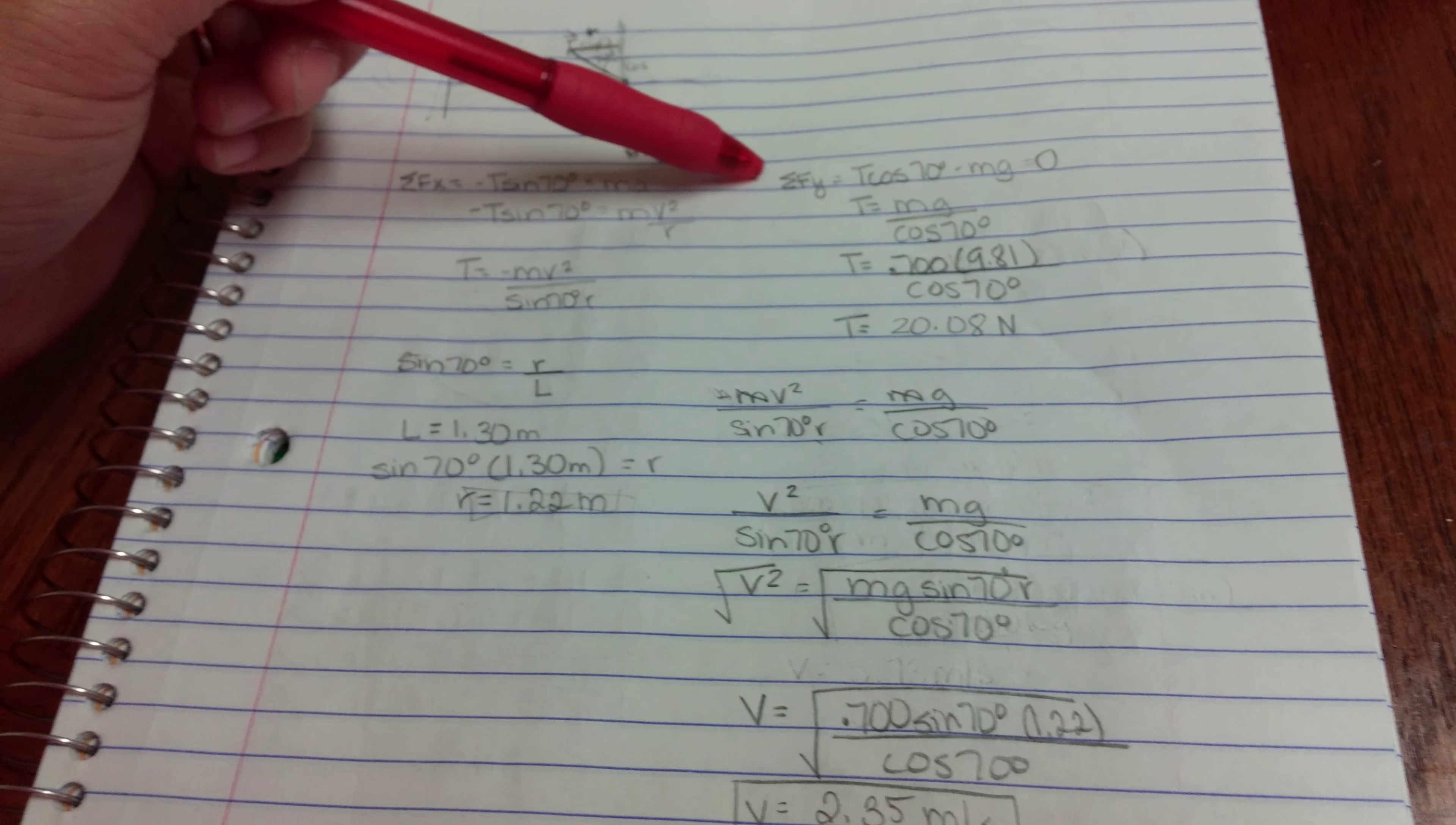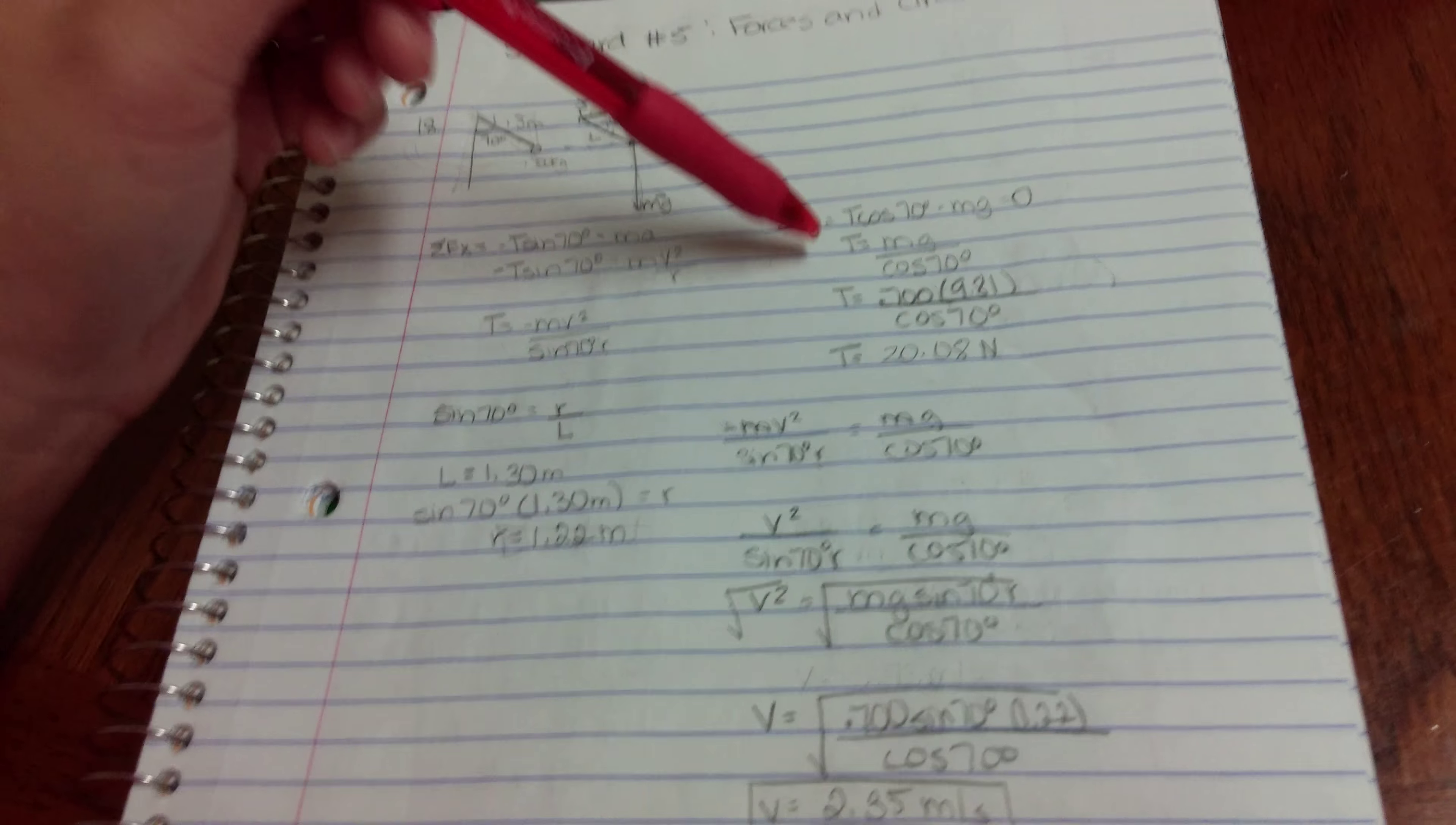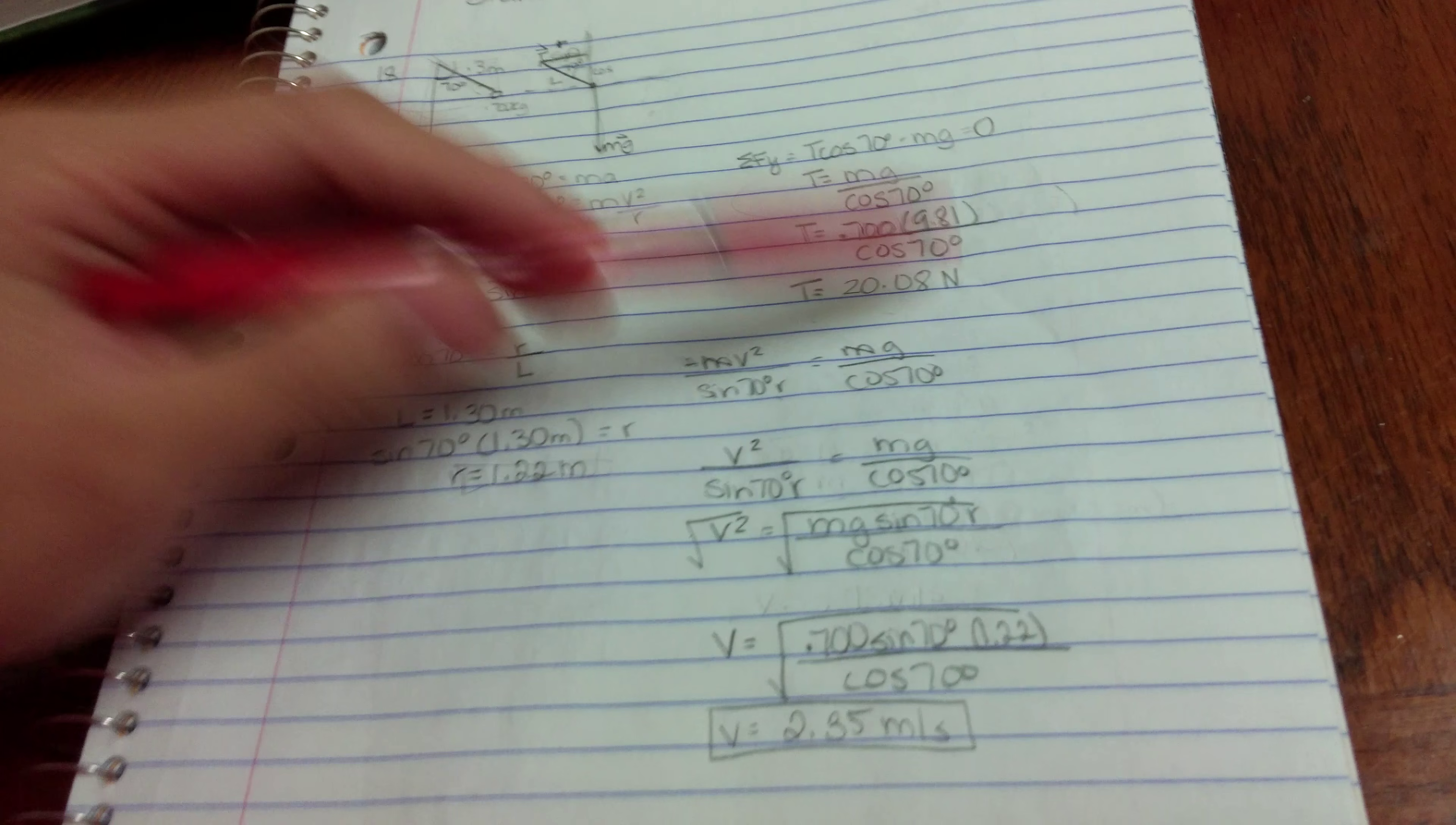So I go over to my sum of y components. And then t is positive in this direction. So it's positive tension cosine of 70. And then gravitational force is pulling downwards, so it's negative mg. Solve for t, move m to the other side, divided by cosine of 70. I know my mass, I know my gravitational force. And then I just plugged in a number. I got the tension of 20.08 newtons.